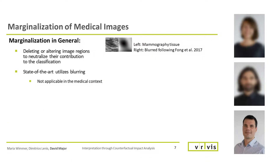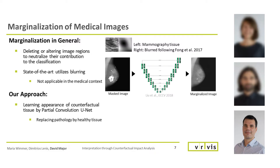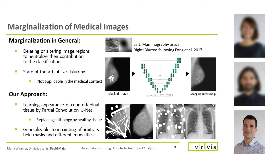Marginalization has the task to delete or alter image regions to make them neutral for a classification contribution. State-of-the-art methods utilize blurring as a marginalization technique, which would introduce anatomically implausible artifacts in a medical context, as visible in the example on the right. To tackle this problem, we apply a deep learning based approach from Liu et al. called partial convolution unit. It learns and replaces healthy tissue appearance at missing and presumably pathological image regions. The method is generalizable to arbitrary hole masks and different modalities, as visible in the images on the right.